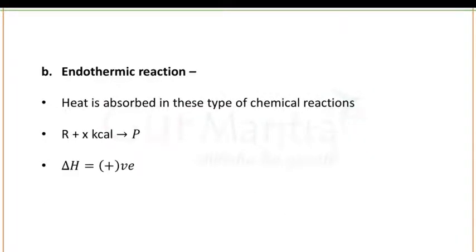In endothermic reactions, heat is absorbed. To convert the reactant into product, some internal heat is required. Reactant plus x kilocalories of heat leads to the formation of product. In endothermic reactions, delta H is positive.